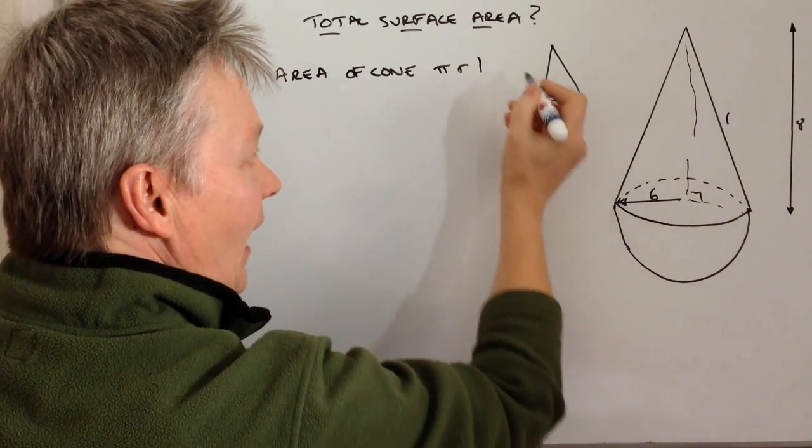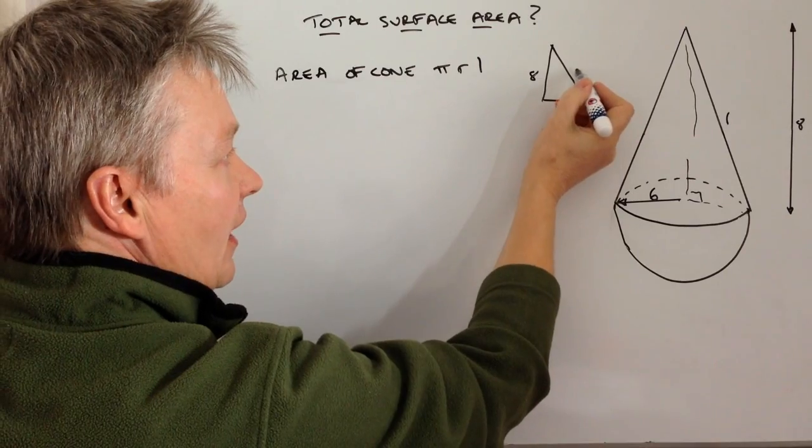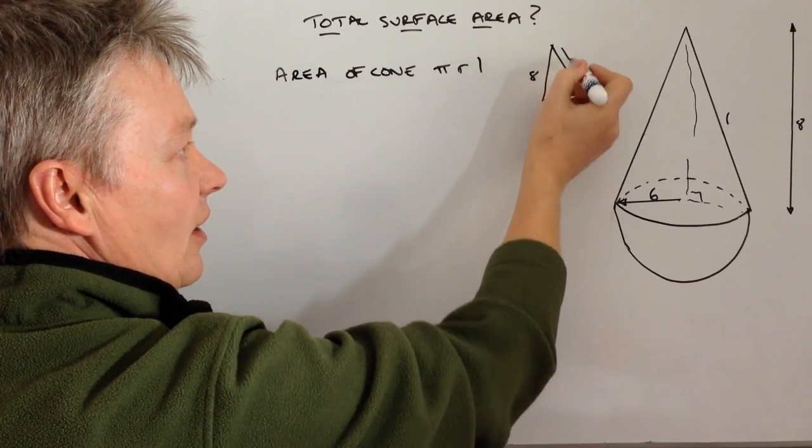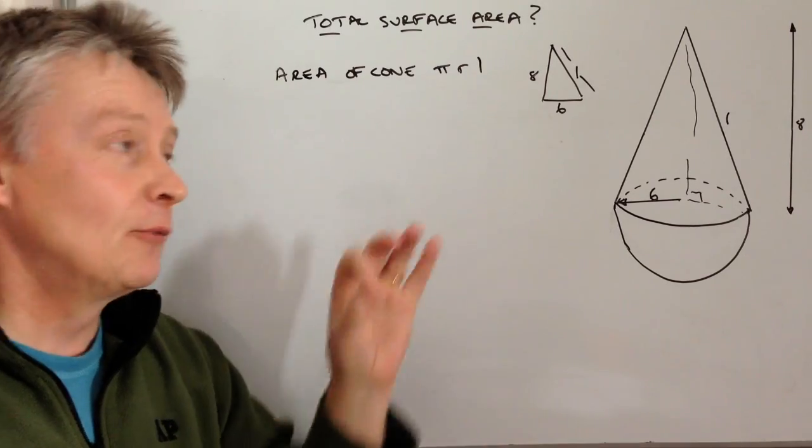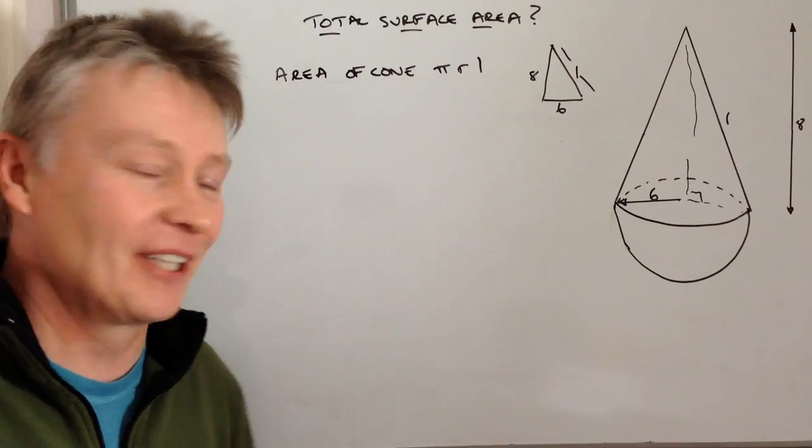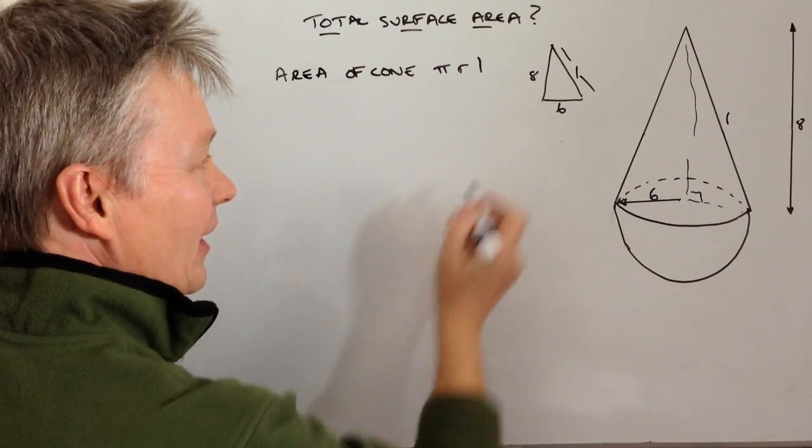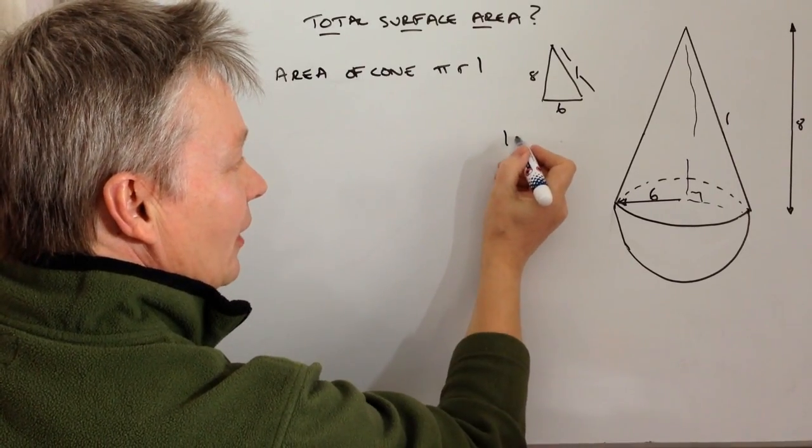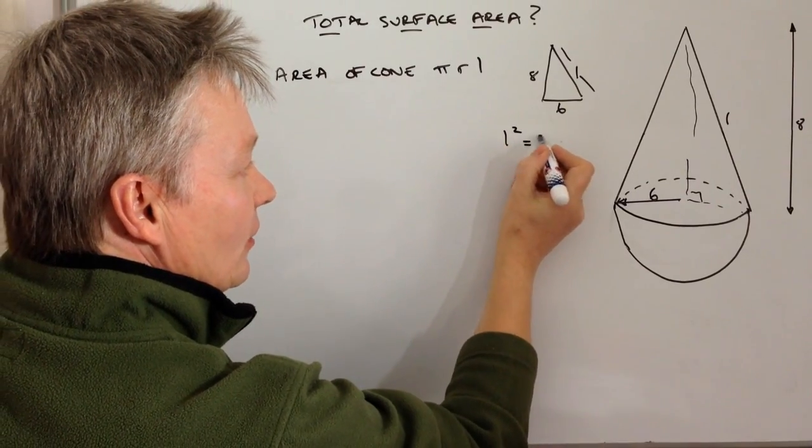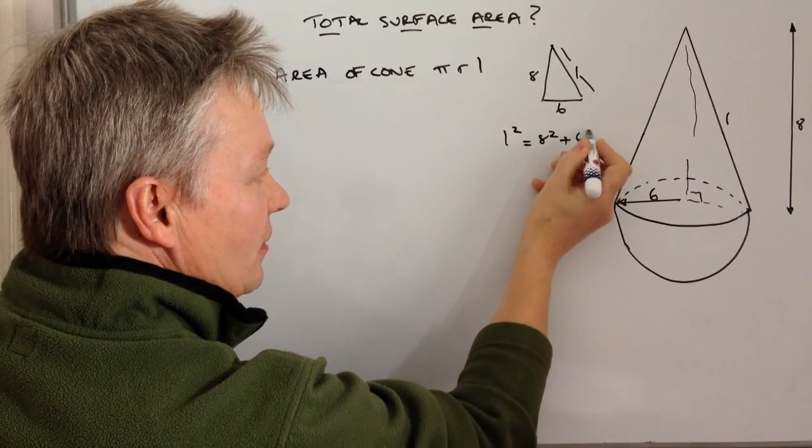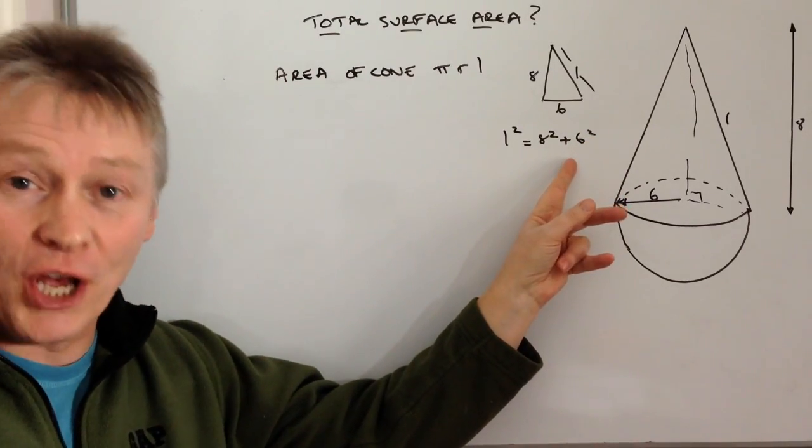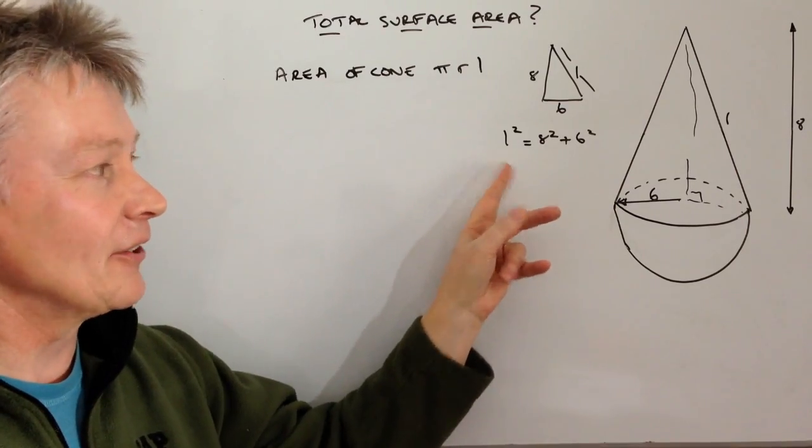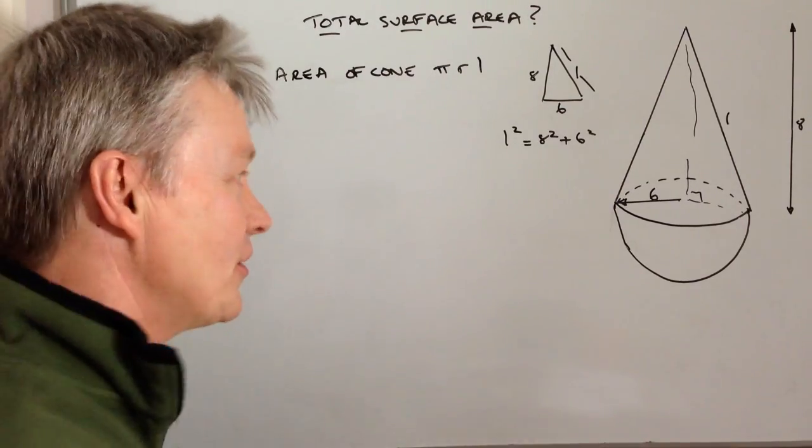The height is 8, but what we're interested in is this here, so this dimension is going to be the bit that we're going to put into here. Well, quite handily with this particular type of question, if we look at l² = 8² + 6², well 64 + 36 is 100, so actually l² = 100.